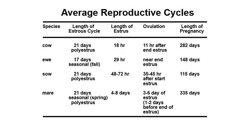This diagram shows the average reproductive cycles of domestic animals. The average length of the estrous cycle for most domestic animals is 21 days, as exhibited by the cow, the sow, and the mare. The ewe is an exception with a shorter cycle of only 17 days. Animals also vary substantially in the length of estrus.